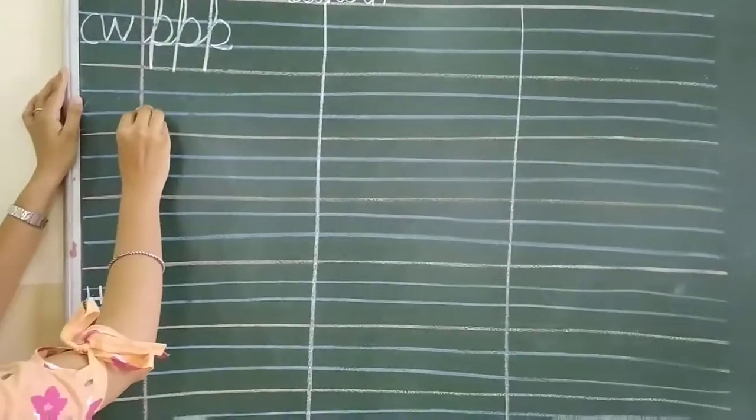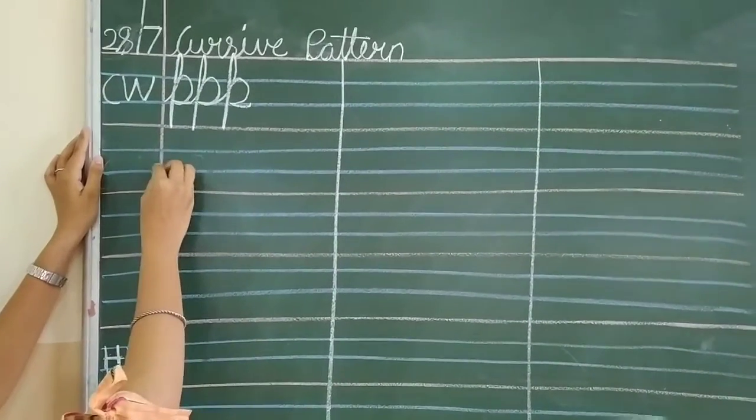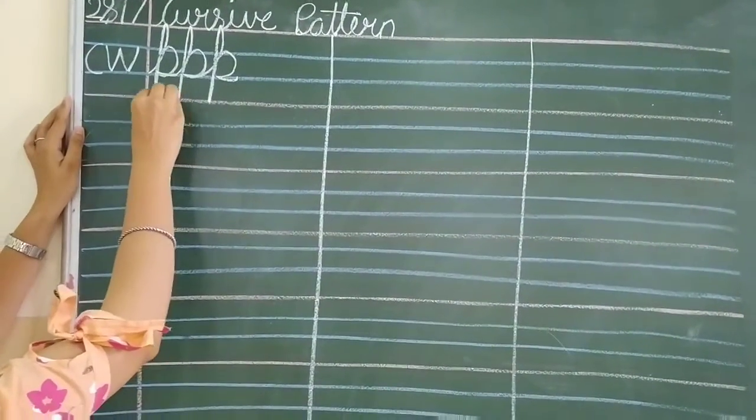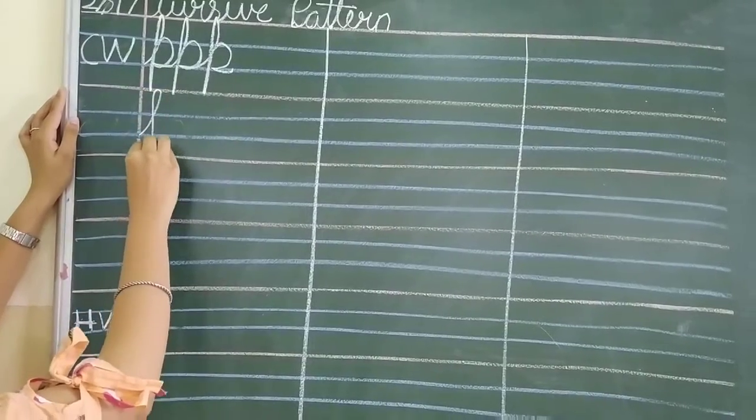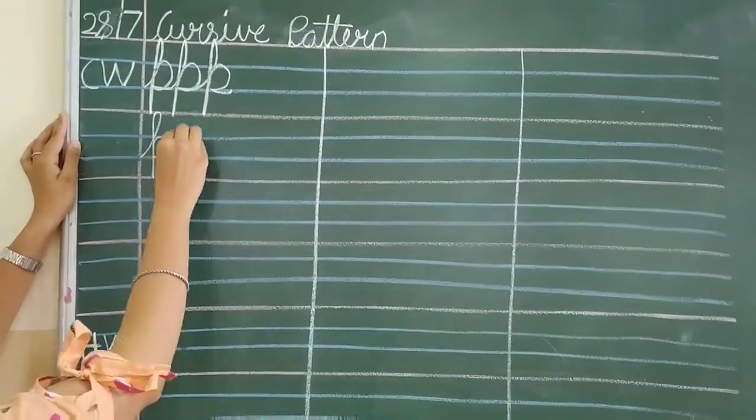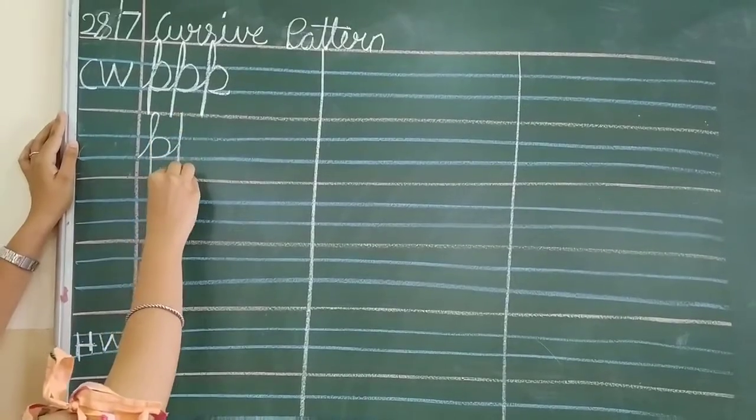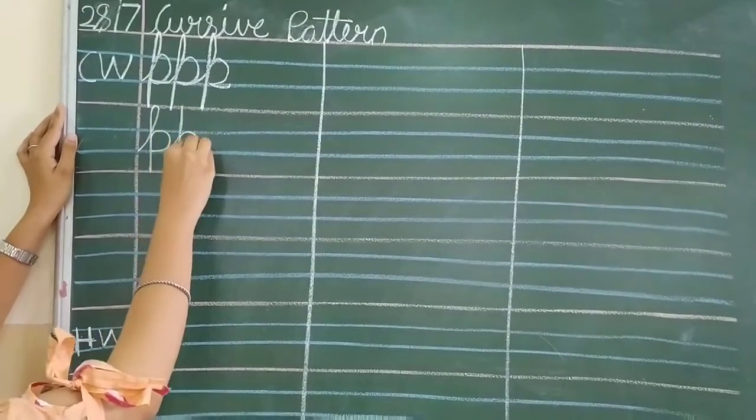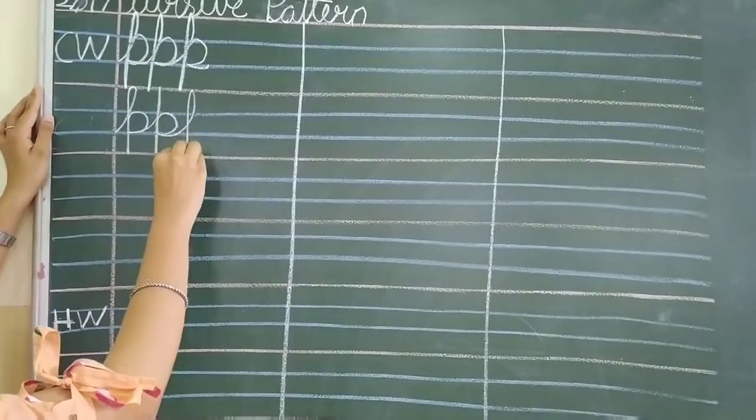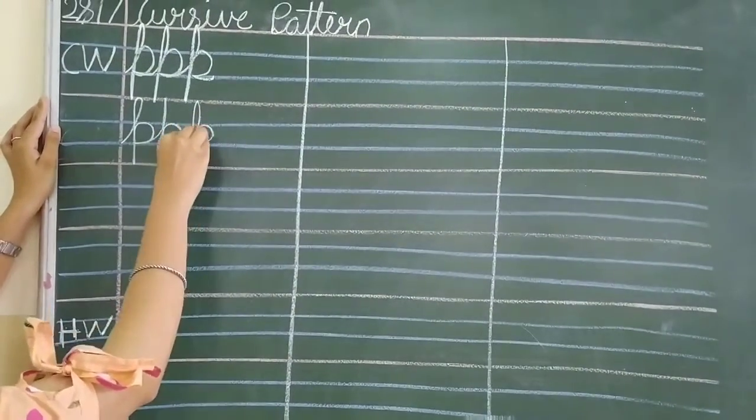Touching from the margin line, second blue line, we are going to write letter P. See, this way. You will not leave your hand and you will write it continuously three times. Letter P.